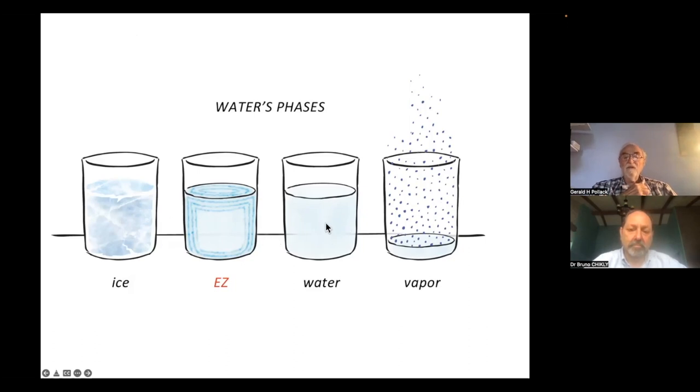It turns out if you want to freeze water, we found it's obligatory to go through this EZ phase and then to ice. And if you want to melt the ice, it's obligatory to go from the ice to the EZ water to the ordinary water.